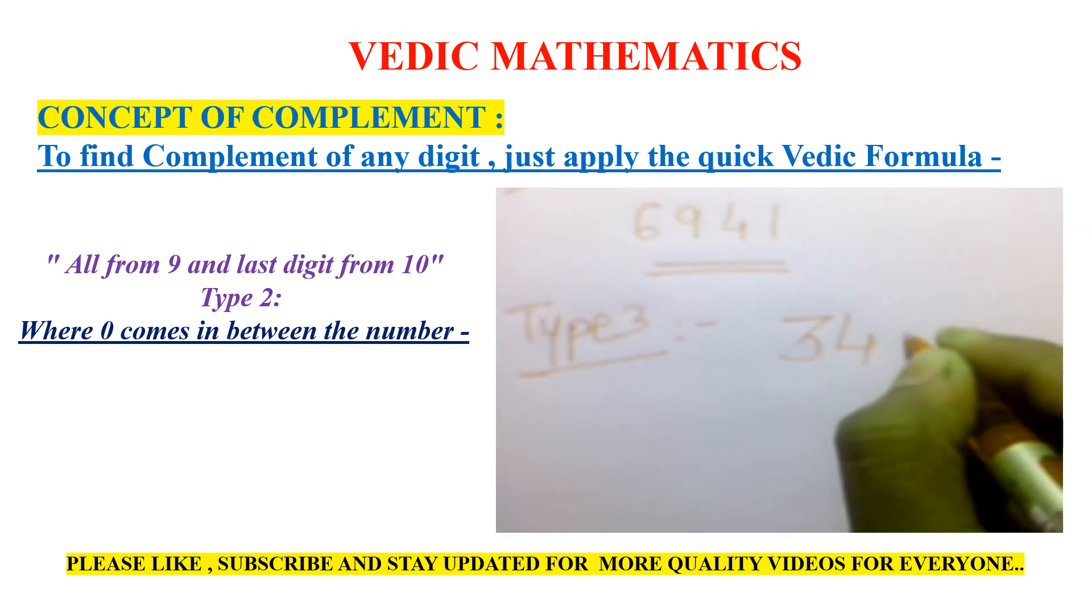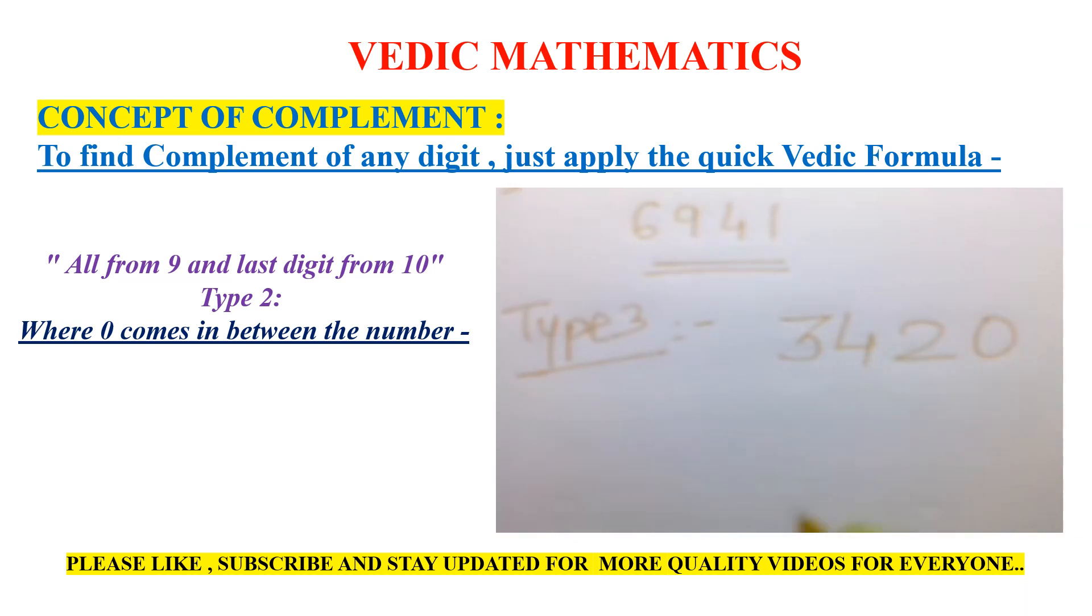The number is 3420. In this case, we write the 0 as it is in the complement. The last non-zero number, which is 2, we subtract from 10, giving us 8. The other digits: 4 becomes 5 and 3 becomes 6. So the answer is 6580.